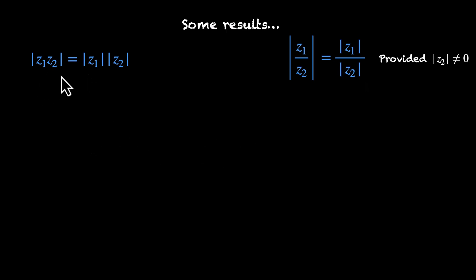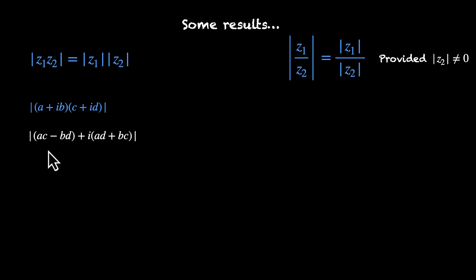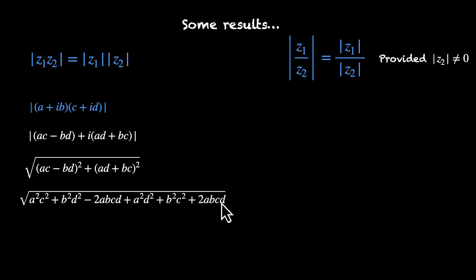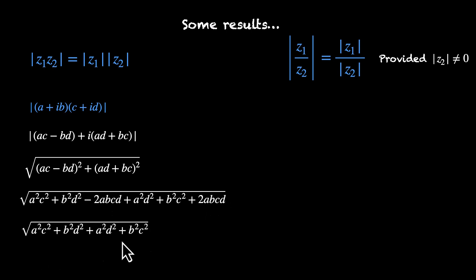Let's prove that |z1·z2| = |z1|·|z2|. Let z1 = a + ib and z2 = c + id. When you multiply them and expand, the real part is ac − bd and the imaginary part is ad + bc. Taking the mod gives √((ac − bd)² + (ad + bc)²). Expanding gives six terms where the −2abcd and +2abcd cancel out, leaving four terms.